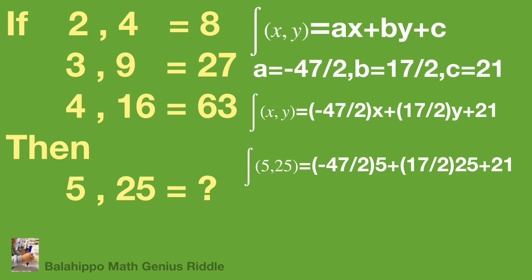Calculating the final value: f(5, 25) = 216. That's the answer. Did you figure it out? Hope you enjoy it. Thank you.